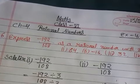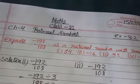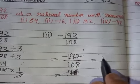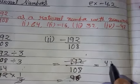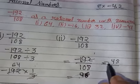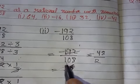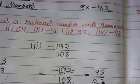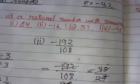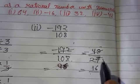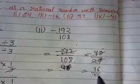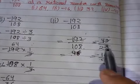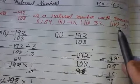Dividing 192 by 4: 4 times 4 is 16, with 8 remaining. Now if we divide by 3 we get 16/27 divided by 3 gives 9, so the result is -16/9. Similarly, you can work out the cases for 32 and 4.